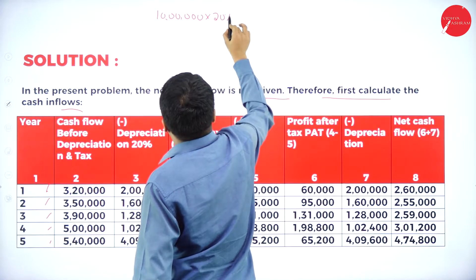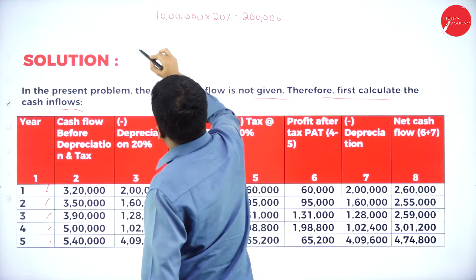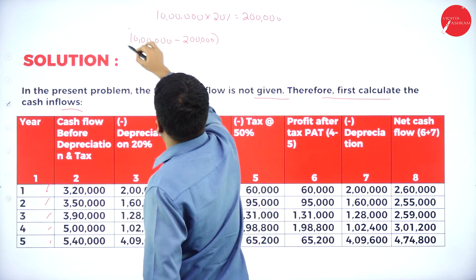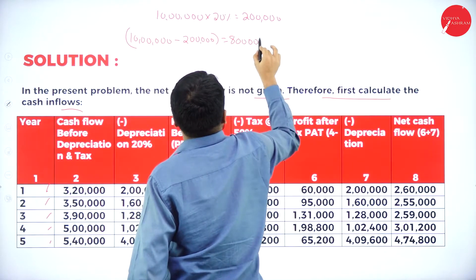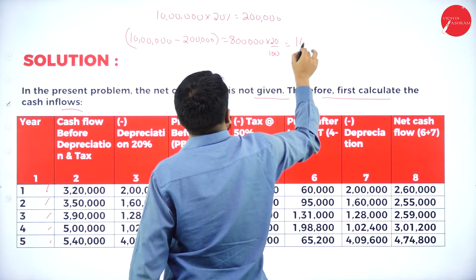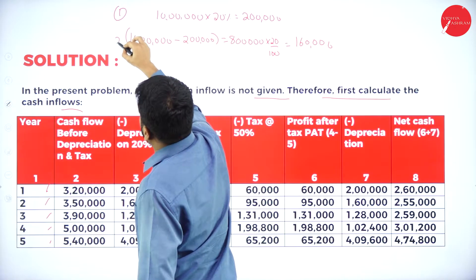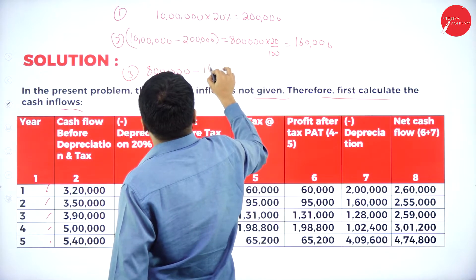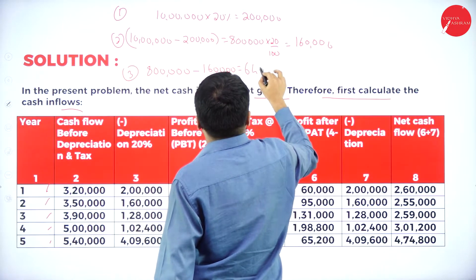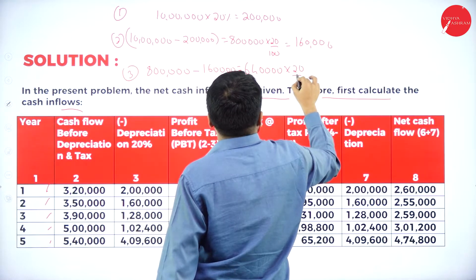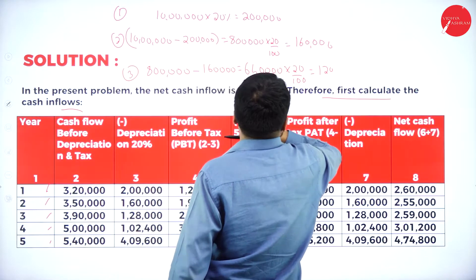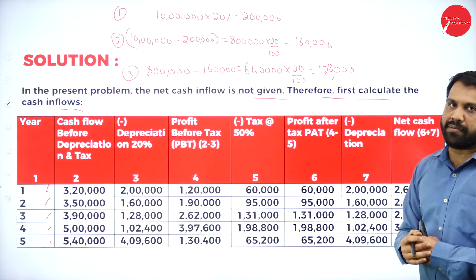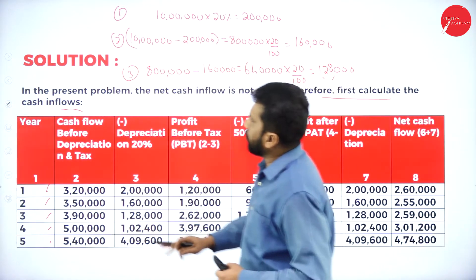Year 1: 10 lakh into 20 percent = 2 lakh. Year 2: 10 lakh minus 2 lakh = 8 lakh; 8 lakh into 20 percent = 1 lakh 60,000. Year 3: 8 lakh minus 1 lakh 60,000 = 6 lakh 40,000; 6 lakh 40,000 into 20 percent = 1 lakh 28,000.